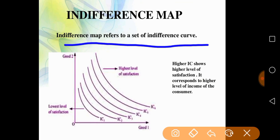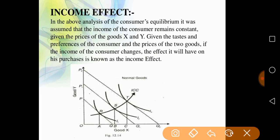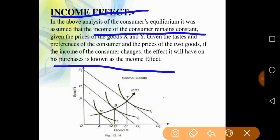An indifference map refers to a set of indifference curves. A higher IC shows a higher level of satisfaction and a lower IC shows a lower level of combination sets. The highest consumption depends entirely on the income of the consumer — higher IC requires higher resources. We can also show the income effect: in our analysis of consumer equilibrium, income was assumed constant. When the income of the consumer changes given fixed prices, preferences, and two commodities, the effect on purchases is known as the income effect.